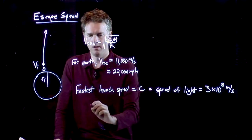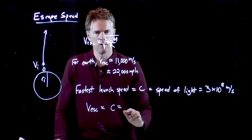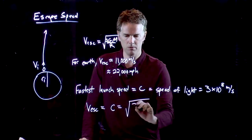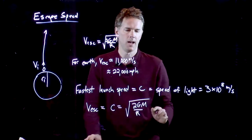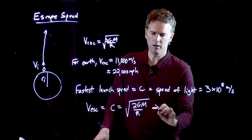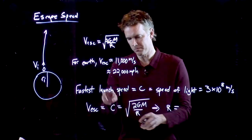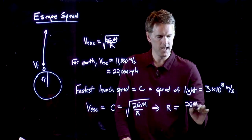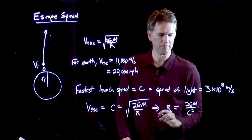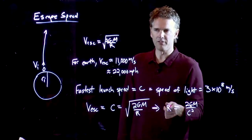Maybe. Let's put it in. So V escape is going to equal C, which equals square root 2GM over R. And I can solve this thing for R. I square both sides, I'm going to multiply across by R, divide by that C squared, and I get 2GM over C squared.